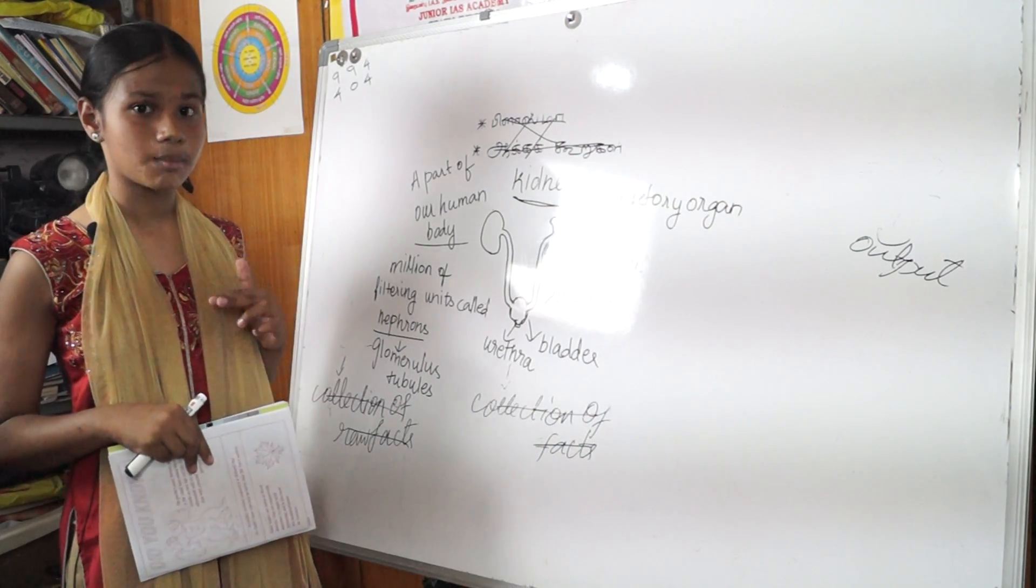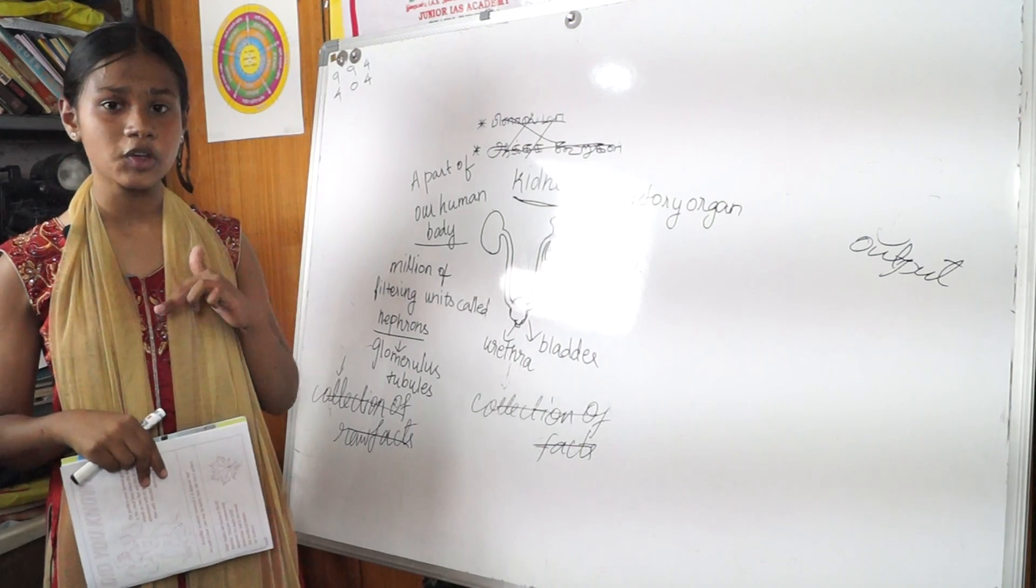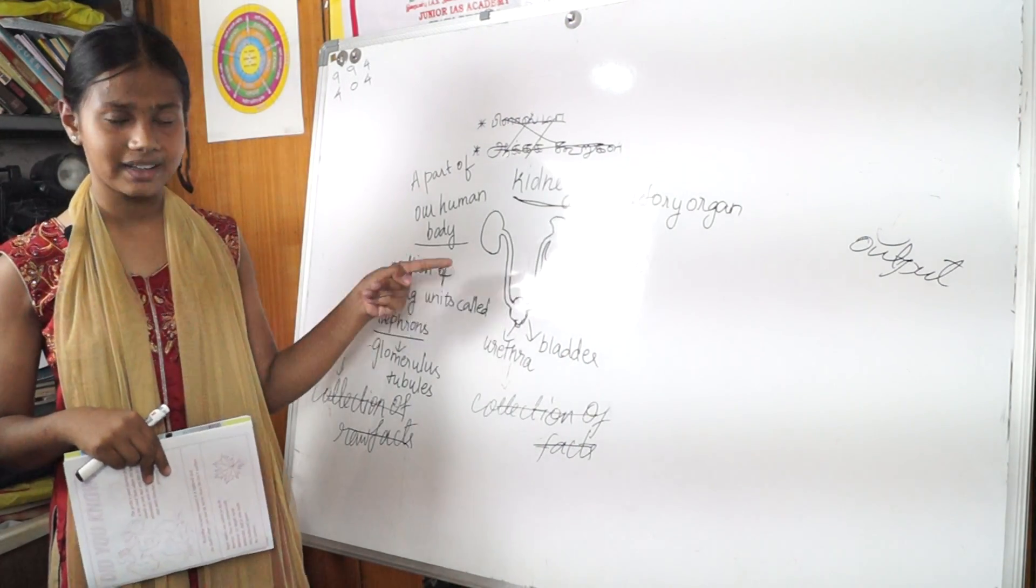A kidney filters about a half cup of blood, removing waste and using it to make the urine.